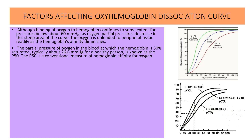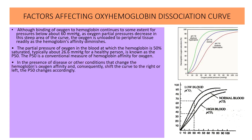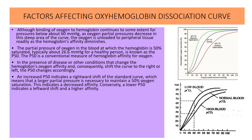P50 is a conventional measure of hemoglobin's affinity for oxygen. In the presence of disease or other conditions that change hemoglobin-oxygen affinity and consequently shift the curve to the right or left, the P50 changes accordingly. An increased P50 indicates a rightward shift of the curve, meaning a larger partial pressure is necessary to maintain 50% oxygen saturation — indicating decreased affinity. Conversely, a lower P50 indicates a leftward shift and a higher affinity.